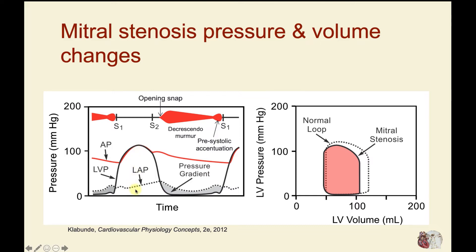What really stands out with mitral valve stenosis is that during diastole — specifically during the portion where the ventricle is filling — whenever the ventricle is filling with blood from the left atrium, there is now a pressure difference between left atrial pressure and ventricular pressure. Normally, the dotted line and the solid black line sit on top of each other during diastolic filling, but now we see a gray zone representing the pressure gradient across that valve.